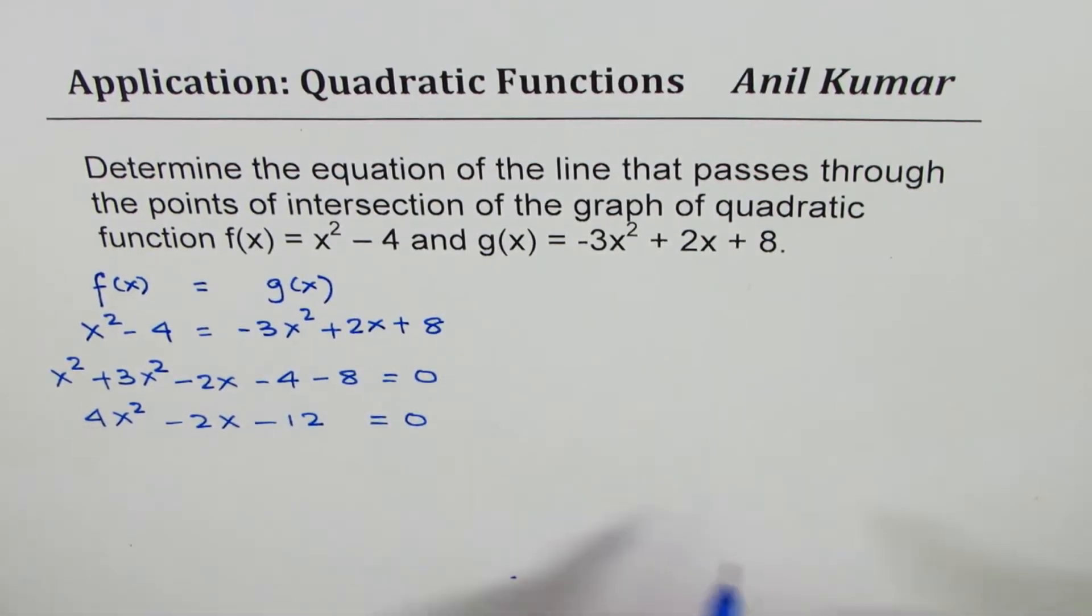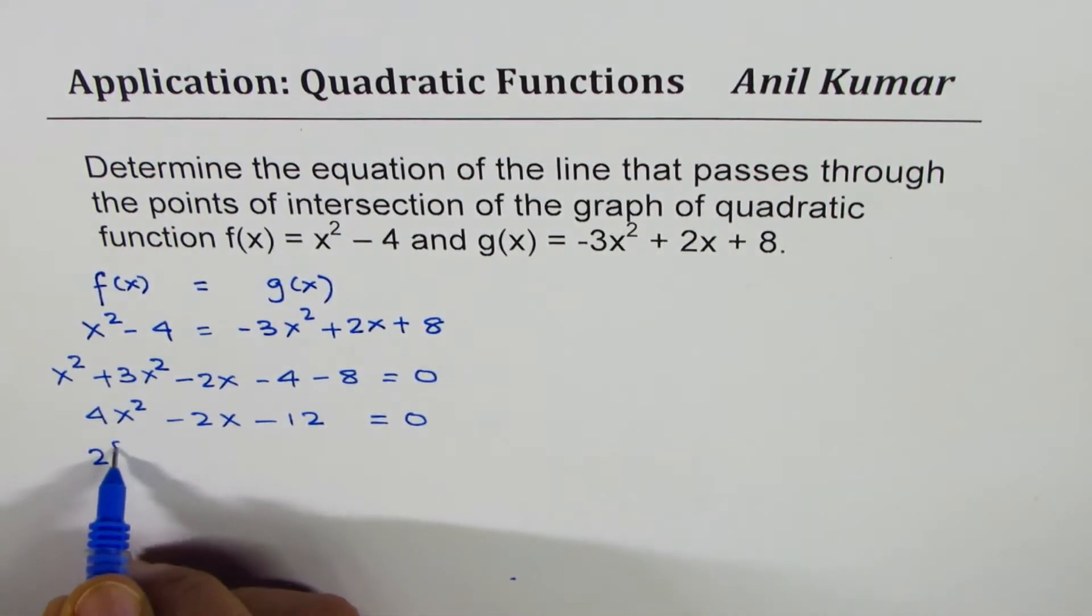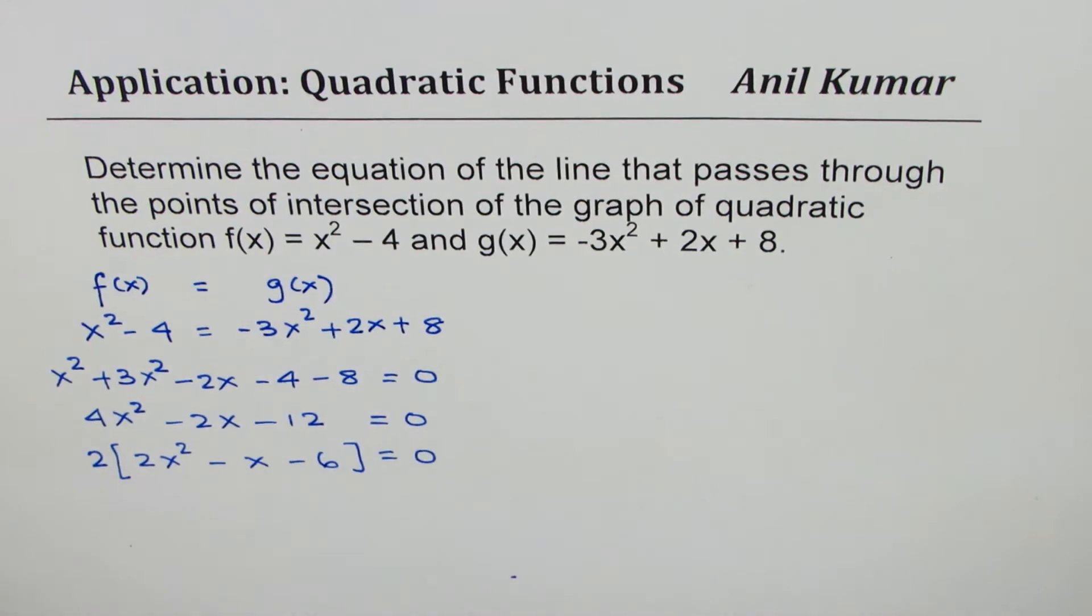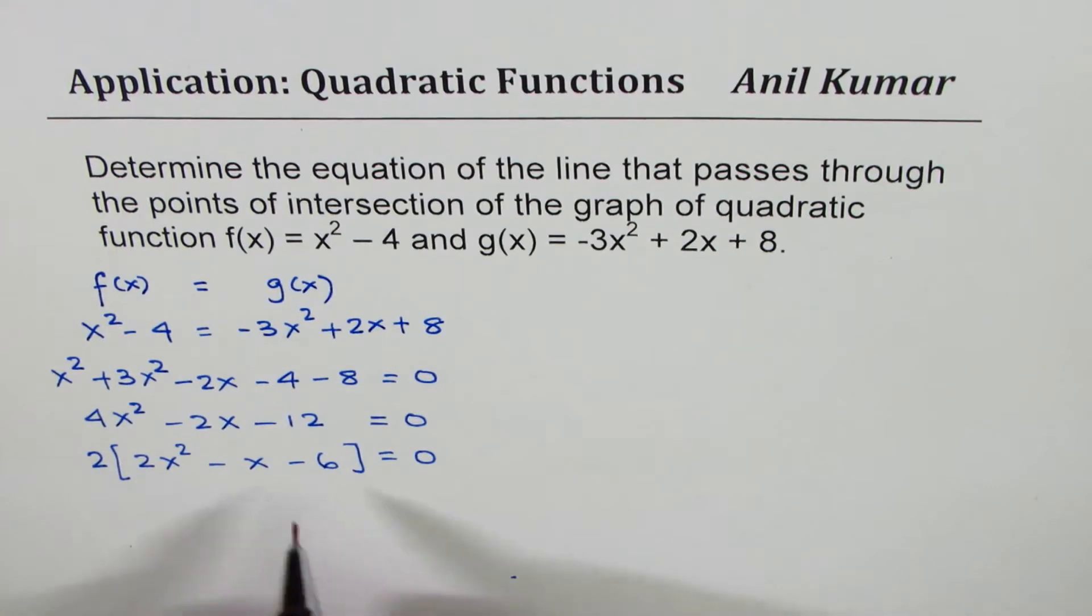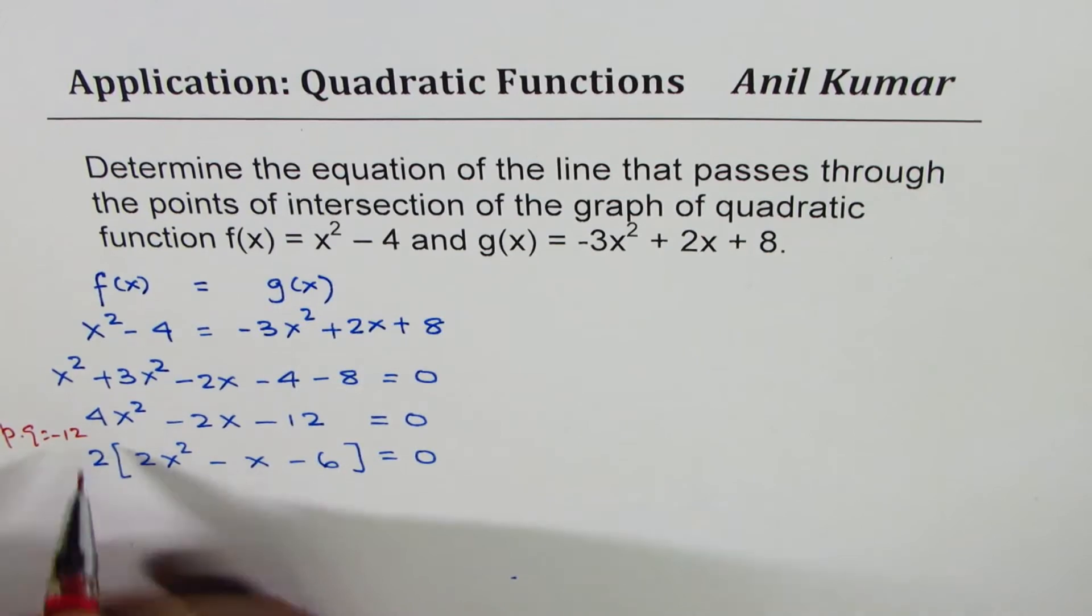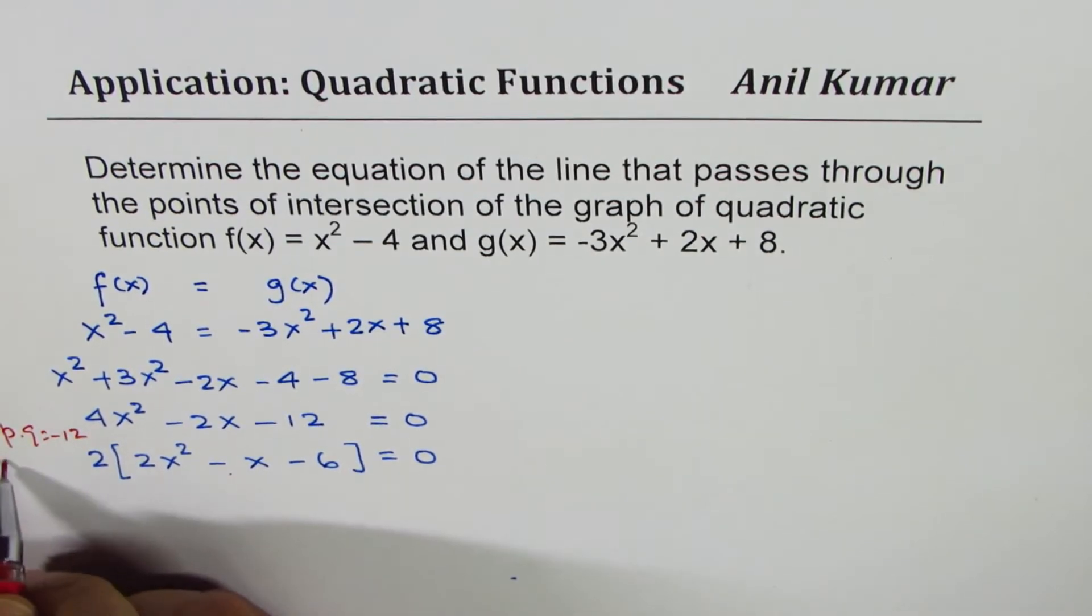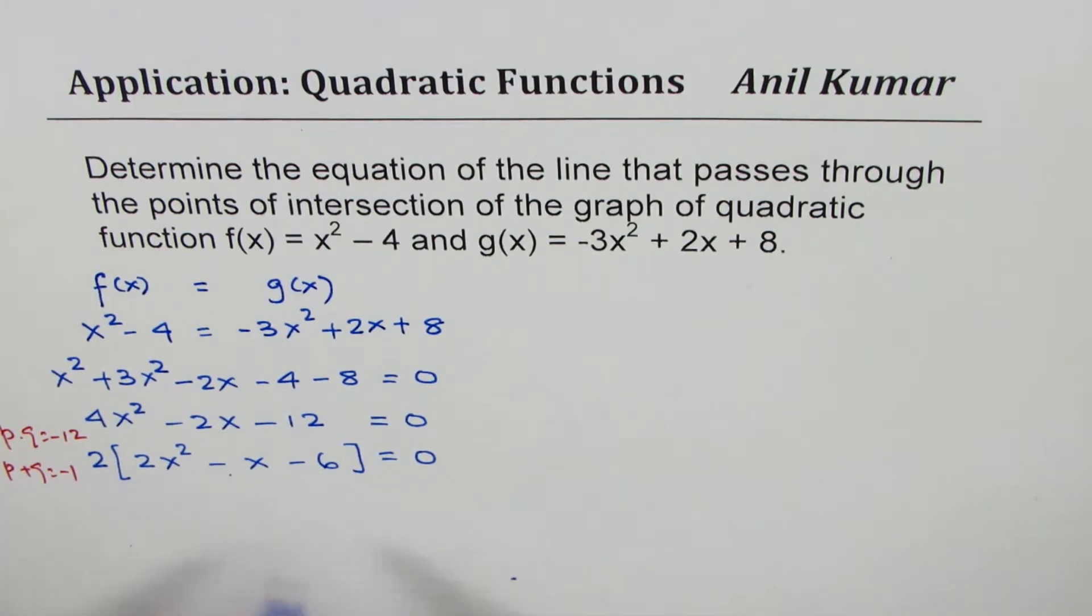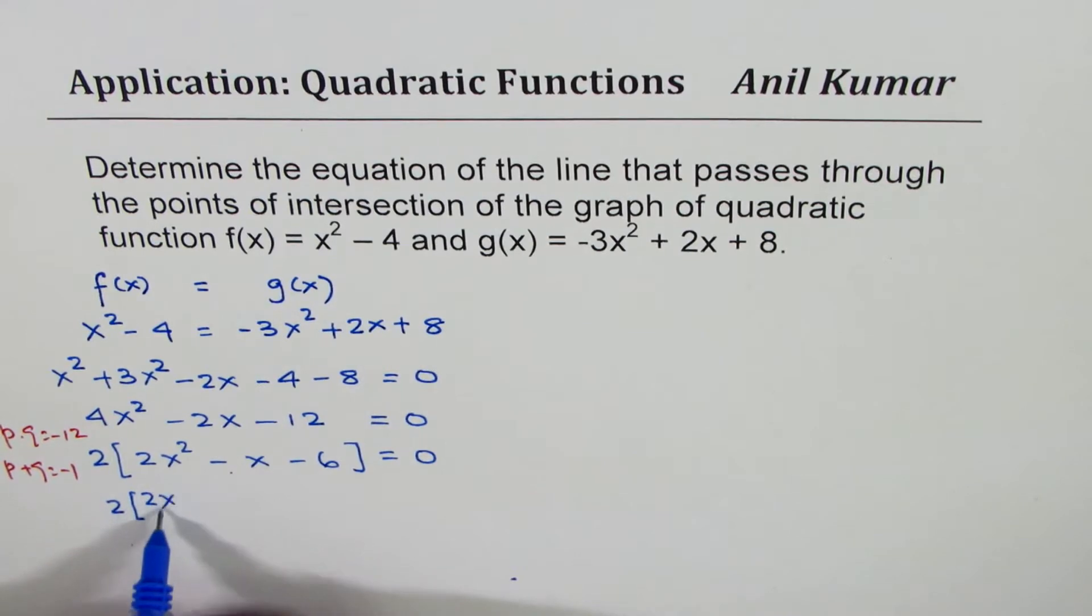We can take 2 common, so we have 2(2x² - x - 6) = 0. To factor, we are looking for a product of 2 times -6 which is -12, and a sum of -1. The numbers are -4 and 3.